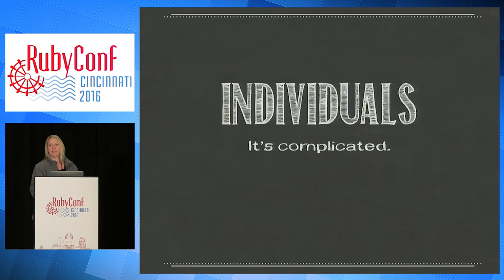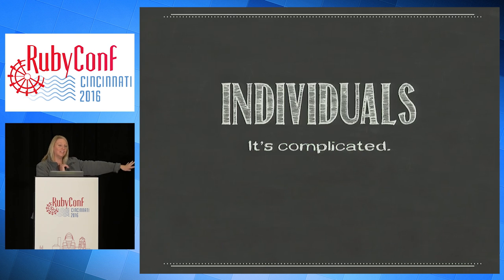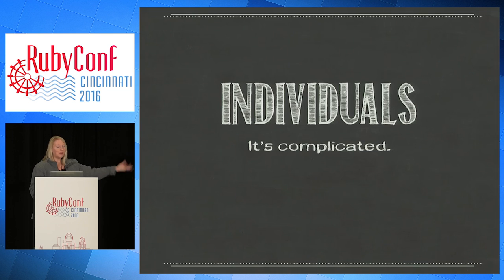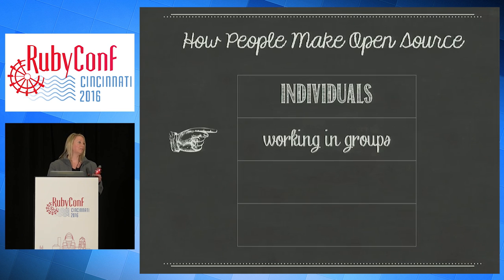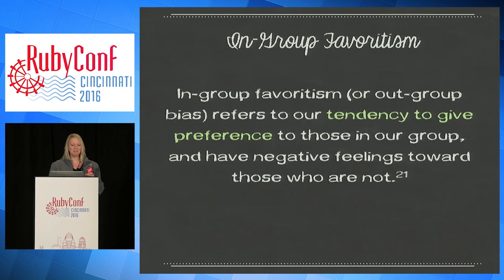So we're pretty complicated, and I only touched on a handful of these things — there are 107 of them. There's a lot going on. Let's jump to working in groups, because now things are going to get even more fun. We're putting all of our messy individual stuff together in a group.